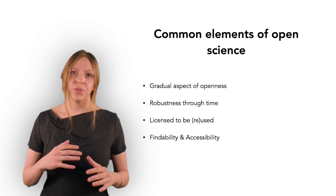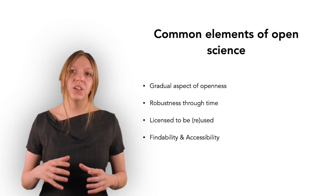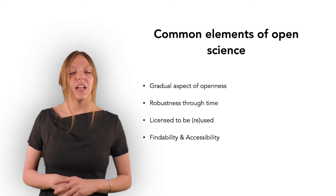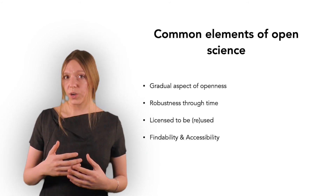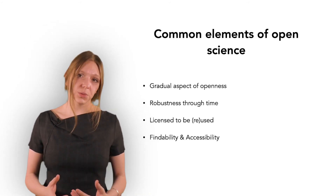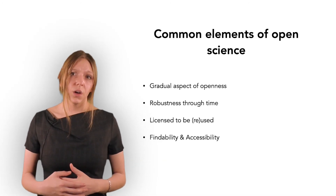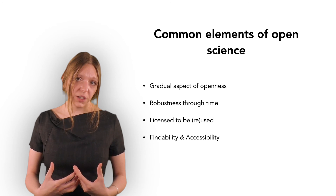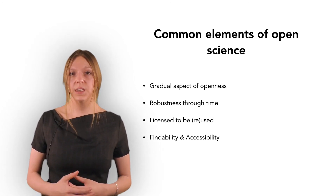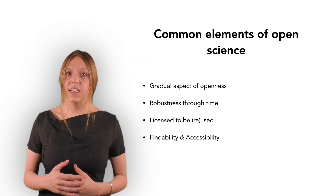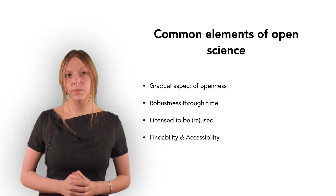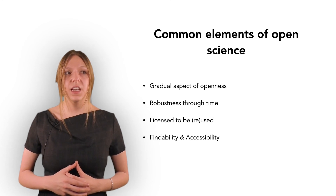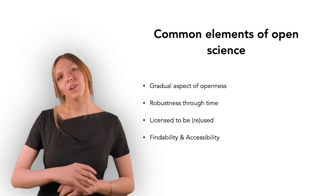After this point, the course focuses on presenting different open science practices. There are a few recurring themes to highlight. First, openness often comes in degrees — standards are established for each practice, but may not always be reachable for valid reasons. Open practices also ensure robustness: if your contents are hosted by a third party, you don't have to maintain the infrastructure yourself, making your scientific product more robust through time. Contents are also licensed in ways that make reuse easy. Finally, questions of findability and accessibility matter — it's much better if your available contents are actually easy to find.